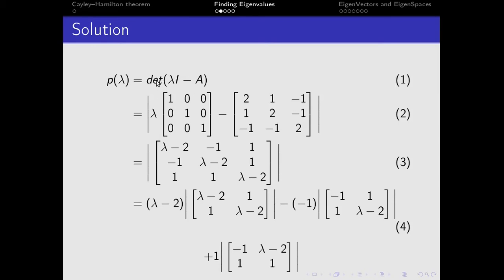We have the expression as seen in the previous slides to obtain the characteristic polynomial. We find the determinant of lambda times I minus A — where I is the identity matrix, lambda is the scalar, and A is our original matrix.